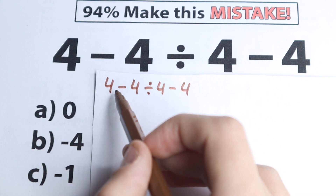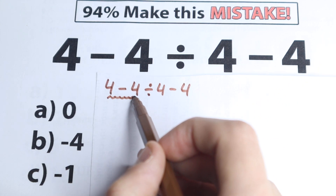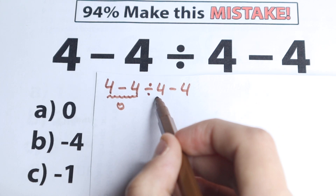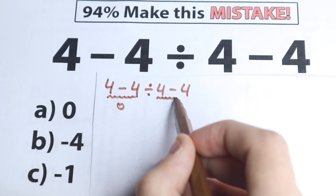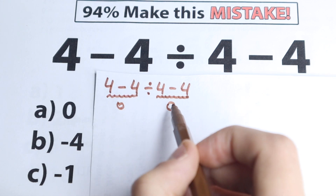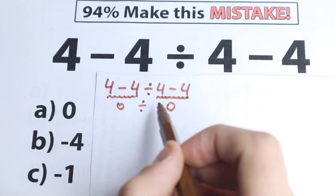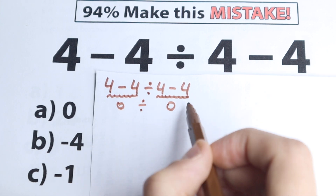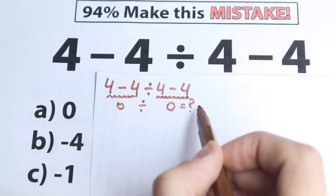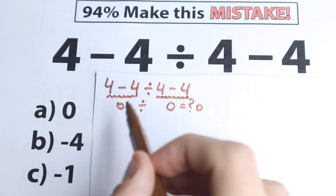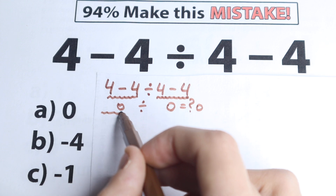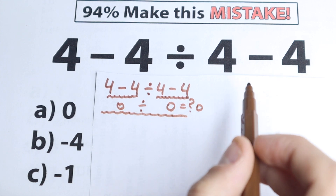They say: 4 minus 4, we know from school this equals 0. And they say we have the same expression 4 minus 4 on the right-hand side, which is also equal to 0. So we have 0 divided by 0, and one part of students say this equals 0. That is the first solution to this question.